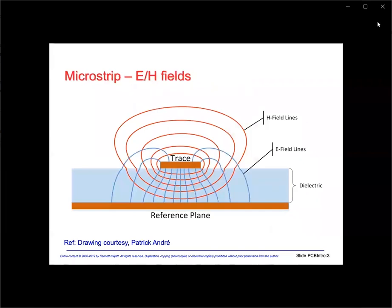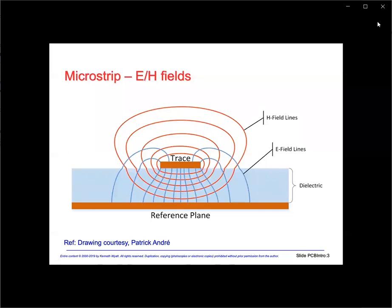This is the cross section of a standard microstrip we're all familiar with. You can see the H field flux wraps around the trace, while the E field is mainly concentrated between the trace and return plane. The actual signal in the form of an electromagnetic wave travels through the dielectric space between the trace and return plane. The trace merely serves as a wave guide and guides the path of the signal energy.